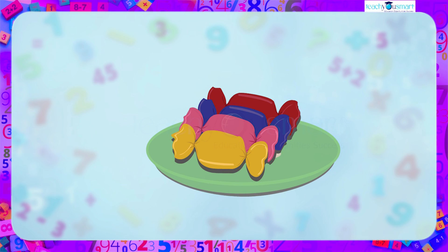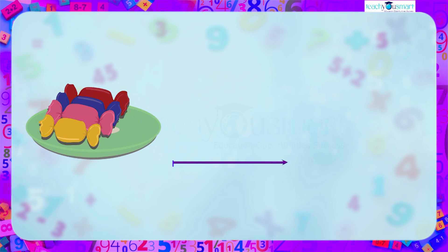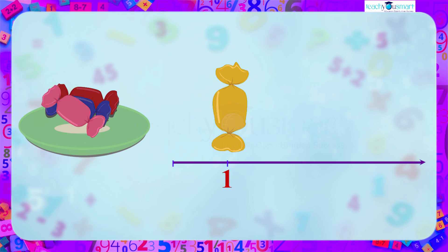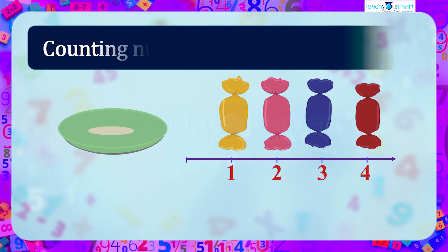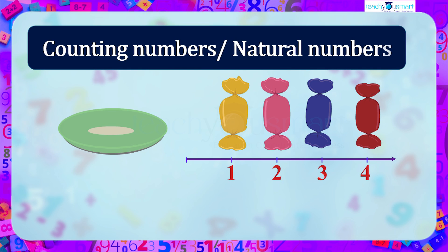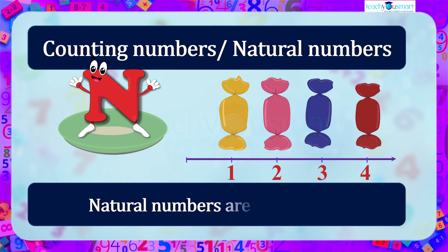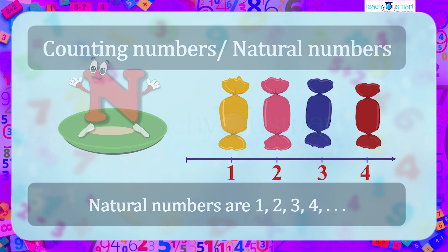Look at this plate with chocolates. Let's count these chocolates by placing them on the number line: 1, 2, 3, 4. The numbers 1, 2, 3, 4, etc. are used for counting chocolates. These numbers are called counting numbers or natural numbers, denoted by N. That is, natural numbers are 1, 2, 3, 4, etc. up to infinity.